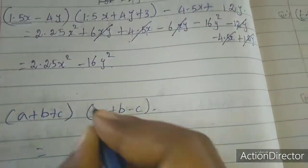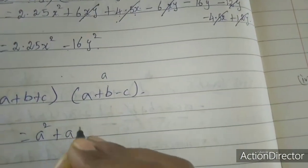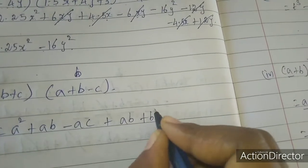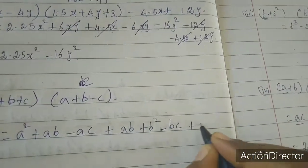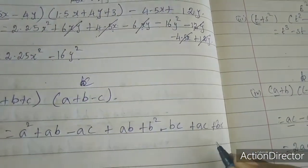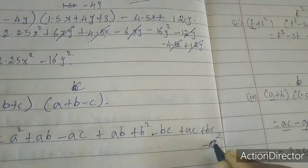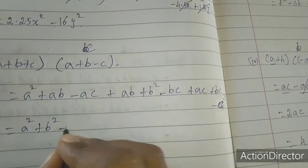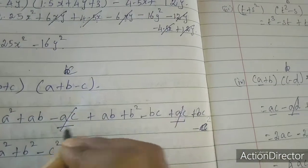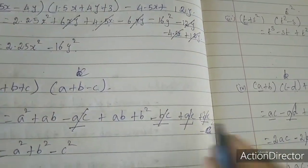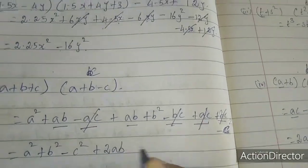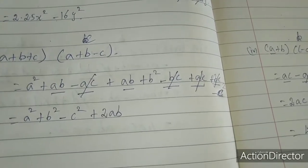Now we will move to the eighth sum. See here: a plus b plus c into a plus b minus c. Multiply a: a squared plus ab minus ac. Next, b: plus ab plus b squared minus bc. Next, c: plus ac plus bc minus c squared. Collecting: a squared plus b squared minus c squared remains. Minus ac plus ac cancel; minus bc plus bc cancel. Balance is a squared plus b squared minus c squared. Thank you.